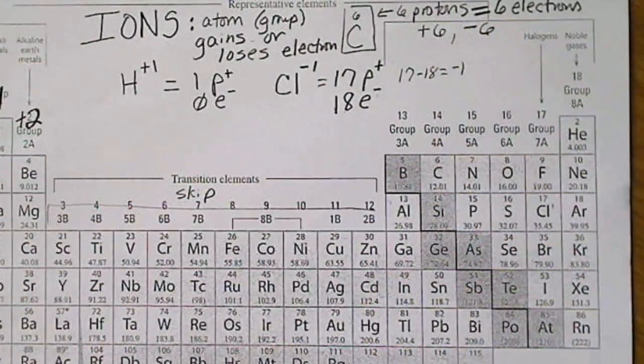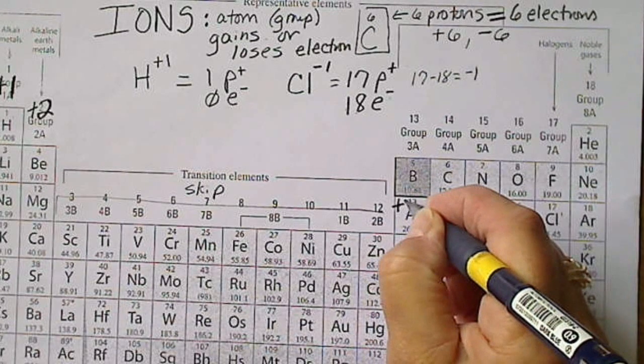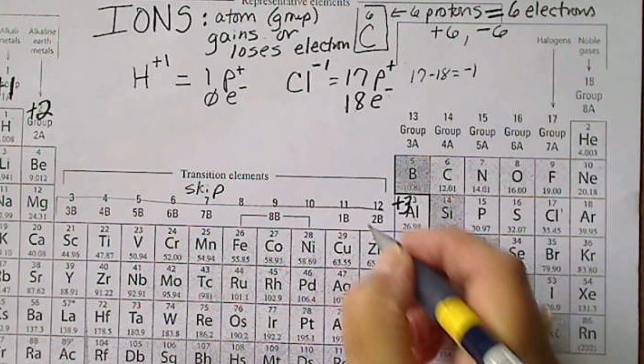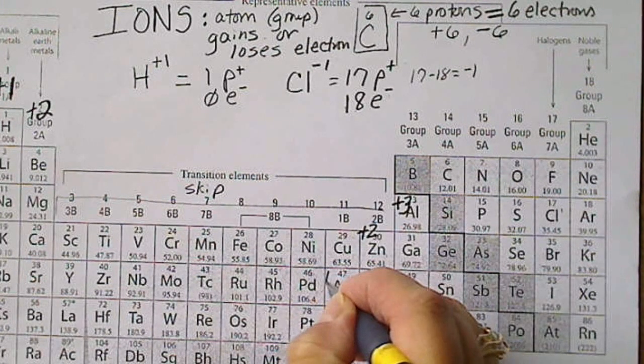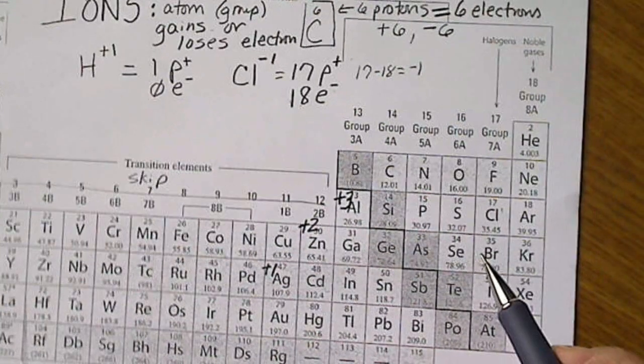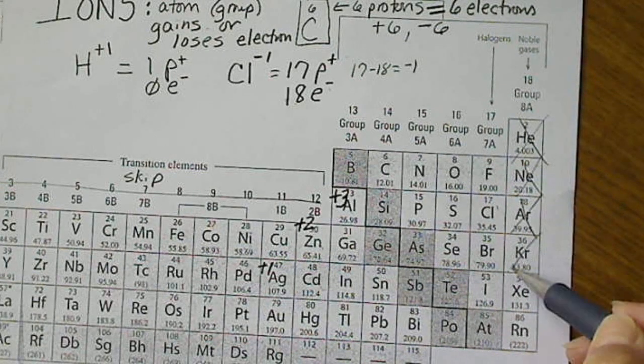So we're going to go over here to aluminum - aluminum is a common metal and we're going to see that a lot. We'll put a plus three on aluminum. Zinc likes to be a plus two and silver likes to be a plus one. And if we go over here, we can pretty much cross these off the periodic table.